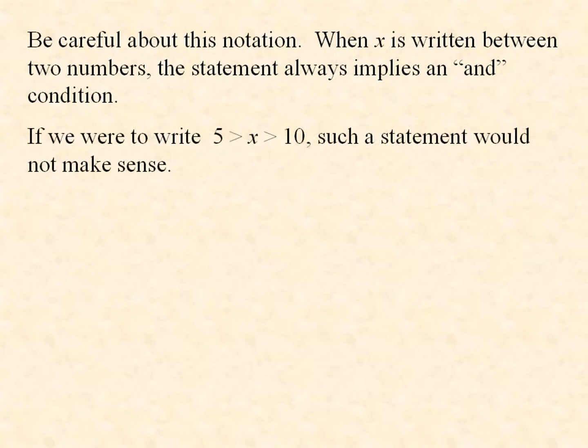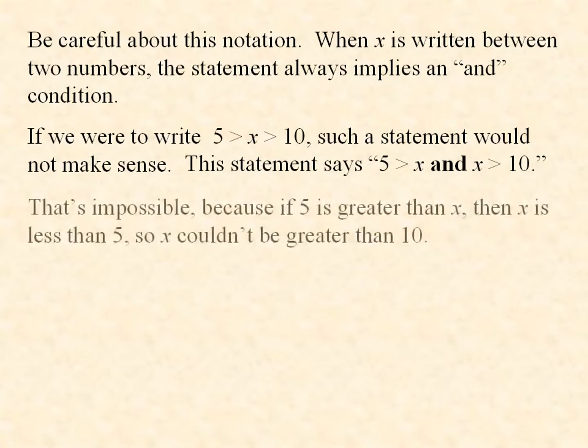If we were to write 5 > x > 10, such a statement would not make sense. This statement says 5 > x AND x > 10. That's impossible, because if 5 is greater than x, then x is less than 5, so x couldn't be greater than 10.